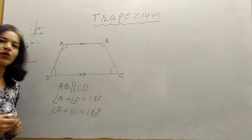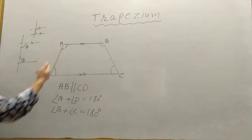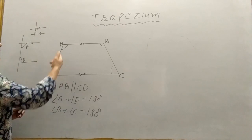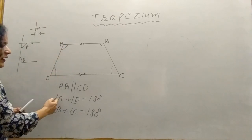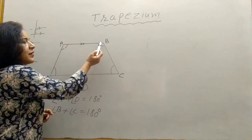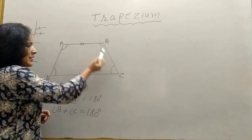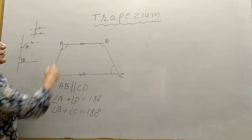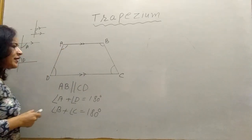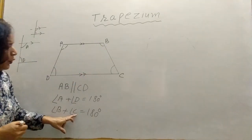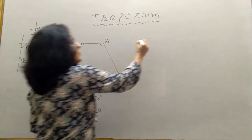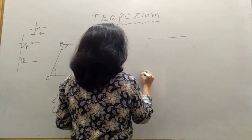Parallel sides are called the bases of the trapezium. Adjacent angles on the non-parallel sides: A and D are on side AD and their sum is 180 degrees. Adjacent angles B and C are on the non-parallel side BC, and the sum of angle B plus angle C is 180 degrees, because AB is parallel to CD and AD acts as a transversal — so these are co-interior angles.